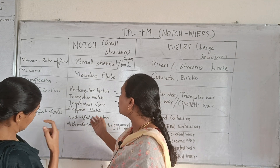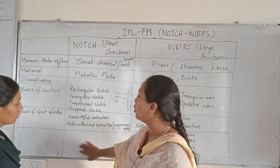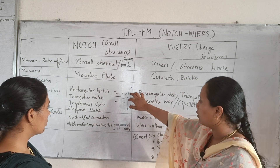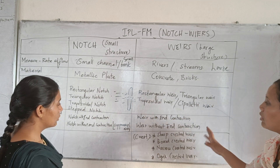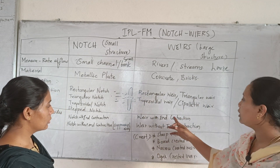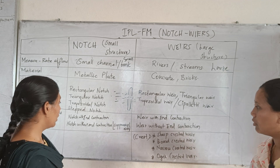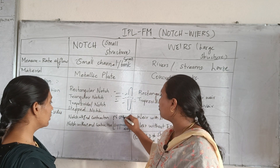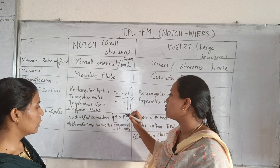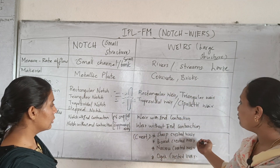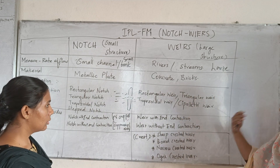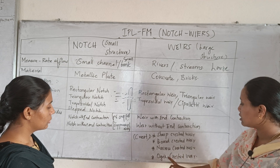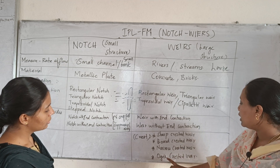A notch can be a single notch with or without end contraction. The construction can be with end contraction or without end contraction — similar to end contraction design. We also classify by Nappe and Crest. If there is a crest, it can be a sharp-crested weir, broad-crested weir, narrow-crested weir, or ogee-crested weir.